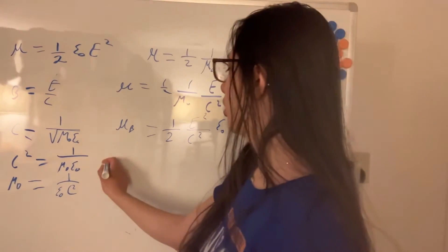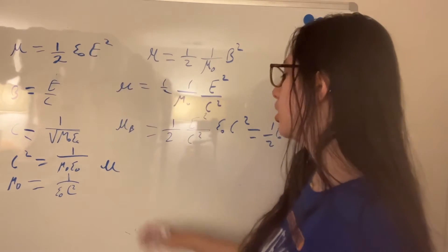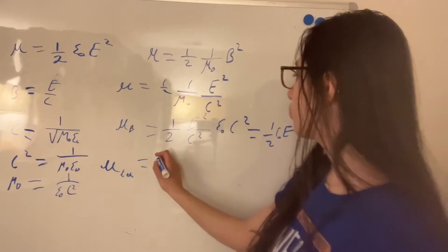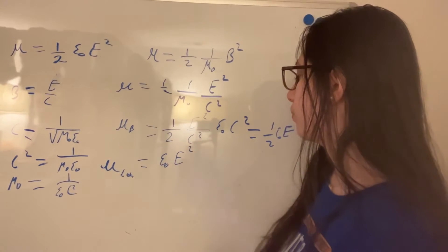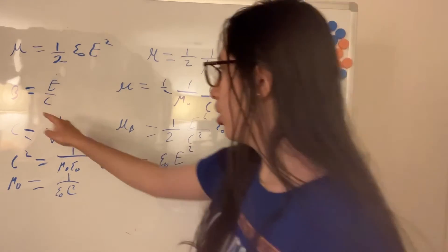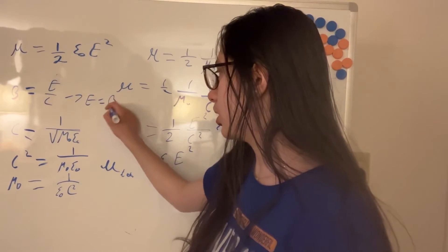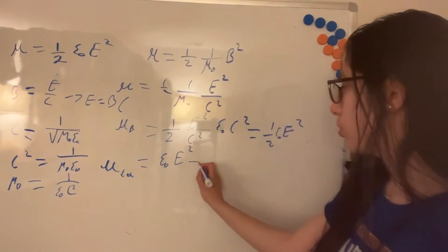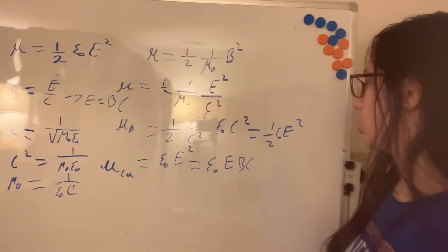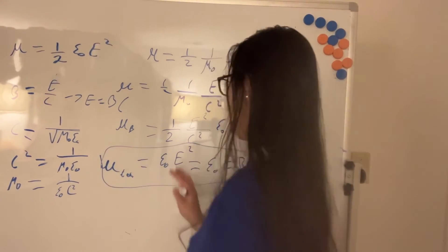So we have that the total energy density is the sum of the electric and magnetic energy densities. U total equals epsilon naught times the electric field squared. Or, if you want to express it in terms of both fields, using E equals B times C, then U total equals epsilon naught times E times B times the speed of light. This is the total energy density.